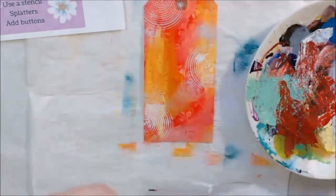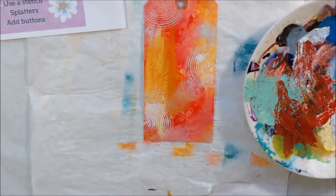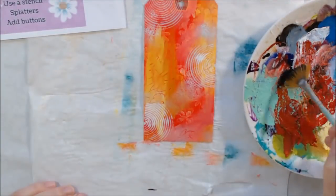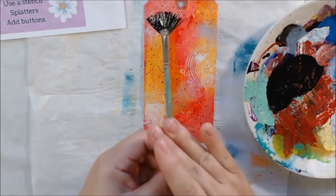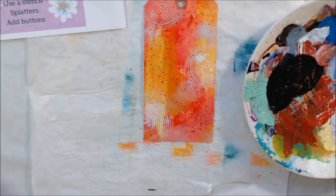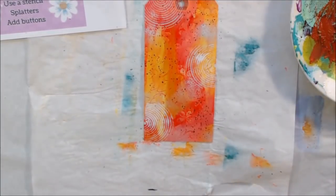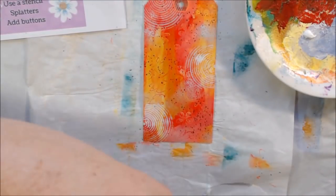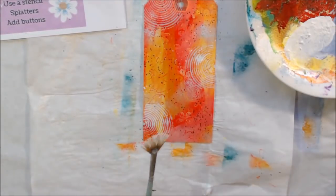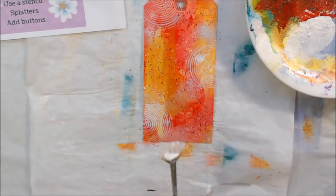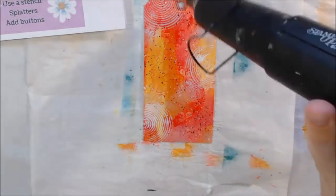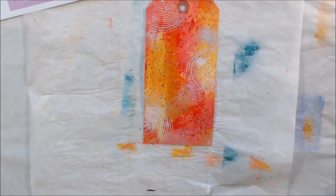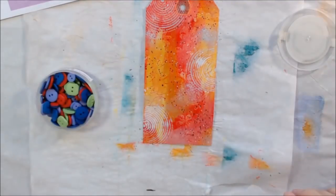I had to find my fan brush - fan brushes are really nice for making splatters. They make nice small, even splatters. If you use a regular brush you can get more variation in the size, but since this was a small tag I decided to use small splatters. I did some black and some white both on the background, and then I gave it a good dry.